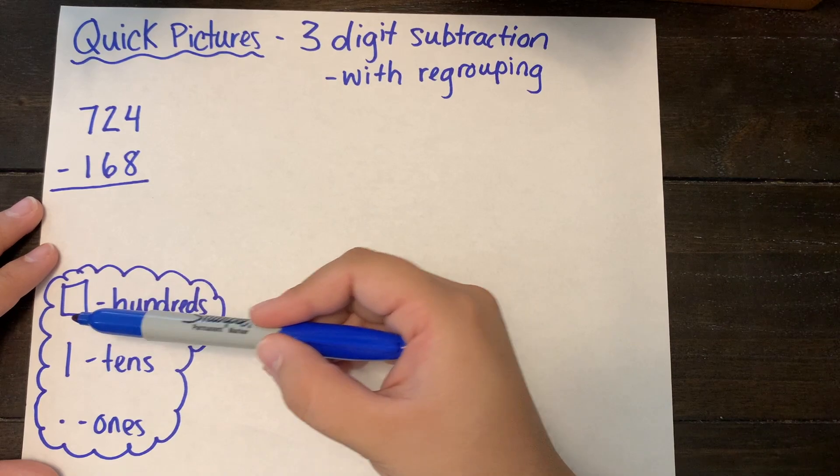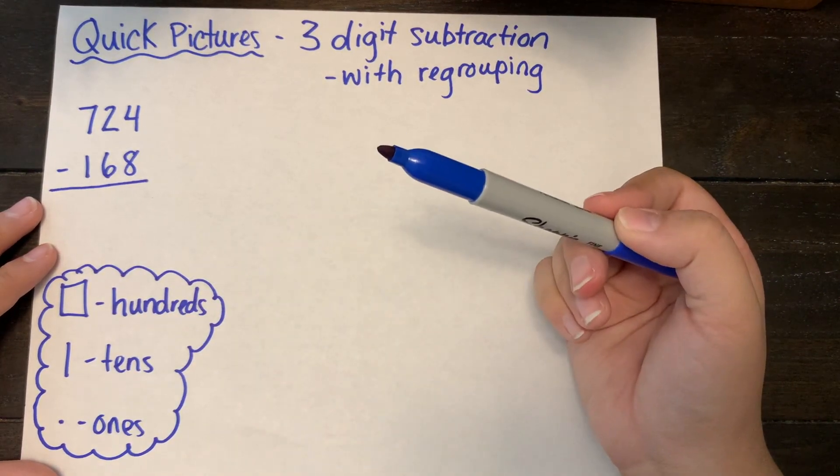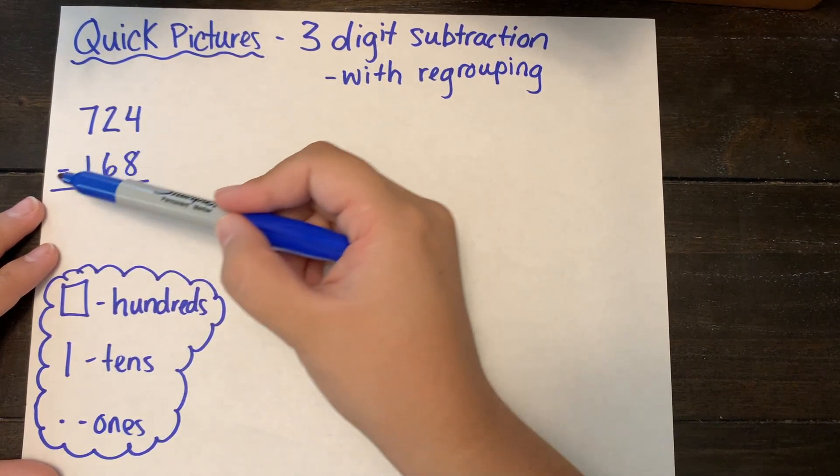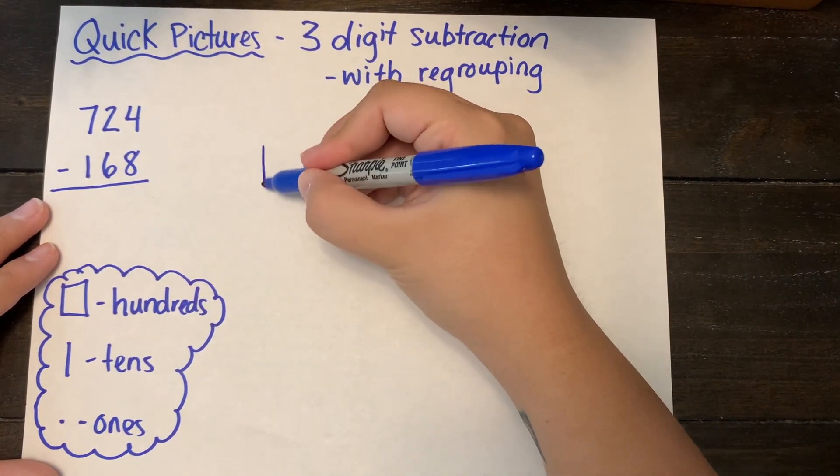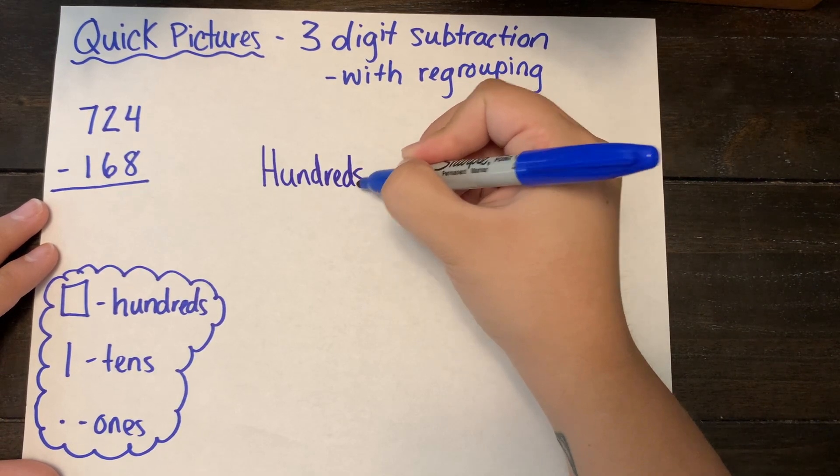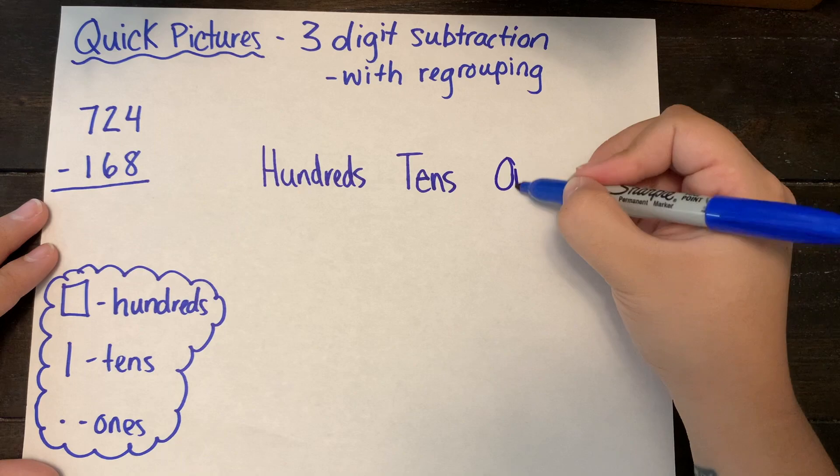Today with solving problems by using quick pictures we're using our hundreds, tens, and ones representations and we're subtracting 724 take away 168. I'm drawing my place value chart labeling each hundreds, tens, and ones in the appropriate columns.